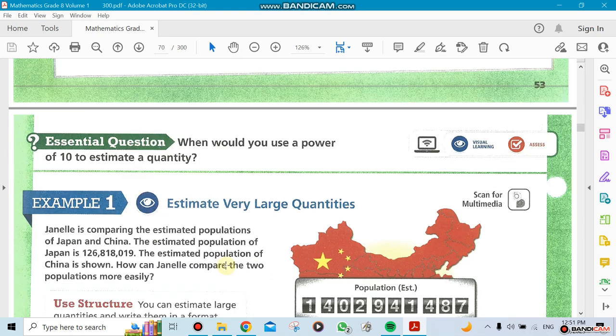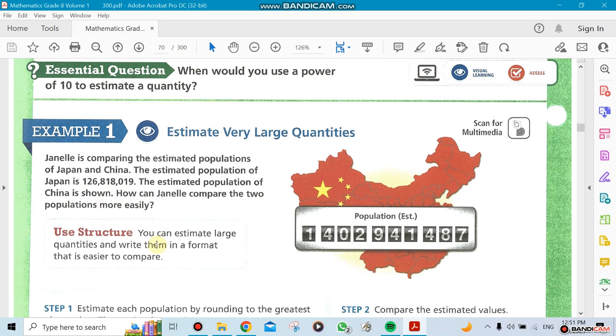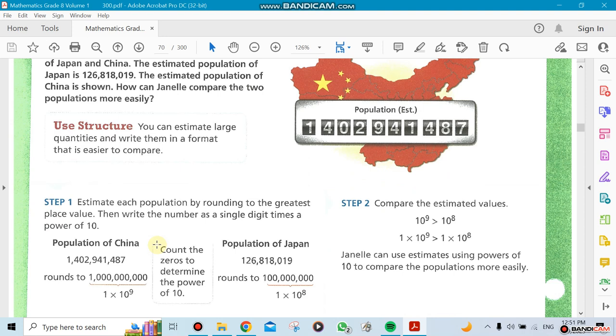You're going to estimate very large quantities. For example, you have 126 million. How can we do them in exponents form? You can see there's nine digits, so you could say multiplying 1 times 10 to the power of 9, which gives you almost that.